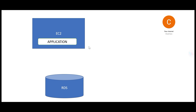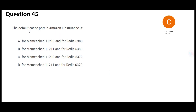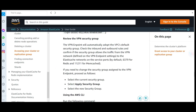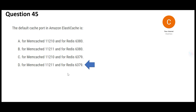The application needs to save data, so you have an RDS database. You place the cache between the application and the database. Cache makes your reads faster but does not help much with writes — only reads become faster. The cache needs to talk with both the application and the database, so you configure ports. According to the documentation, ElastiCache default port is 6379 for Redis and 11211 for Memcache. That is the final answer.